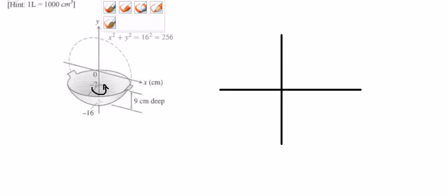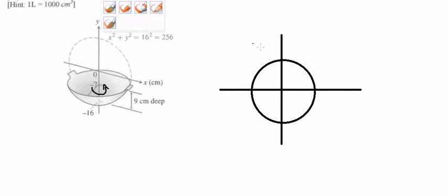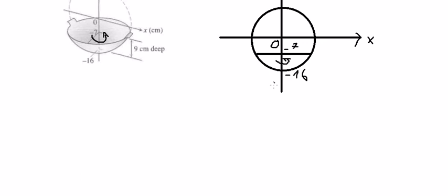So we have a circle here. We have negative 16. They rotate around the Y axis, and we need to find the function for this integration.